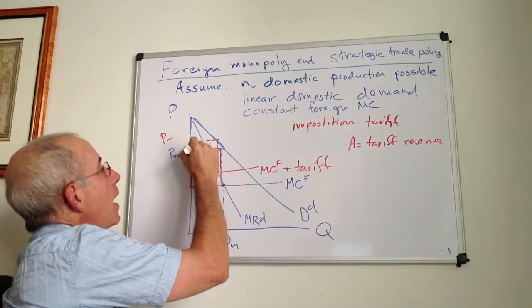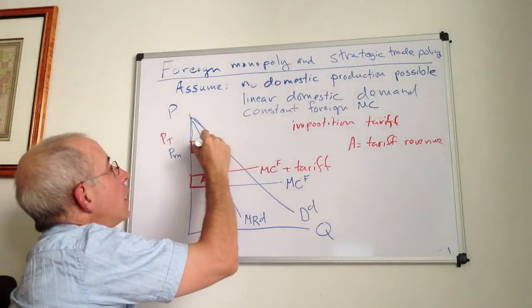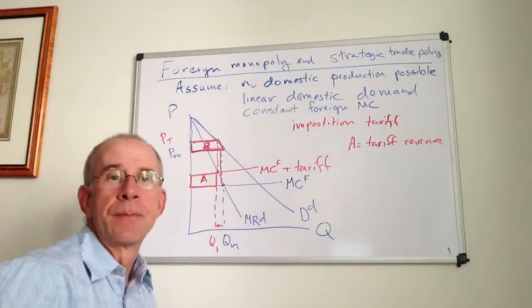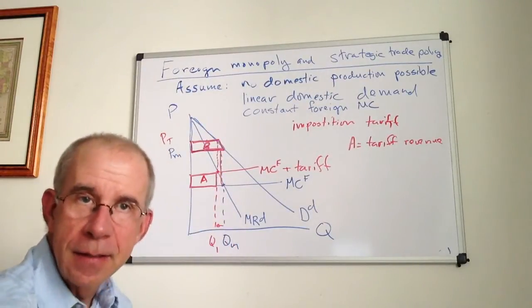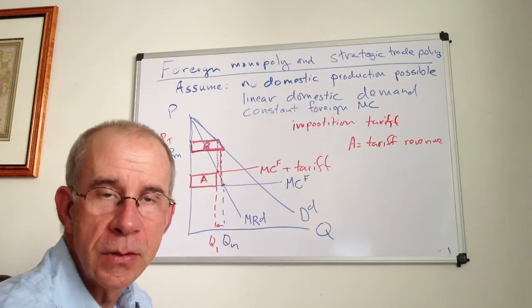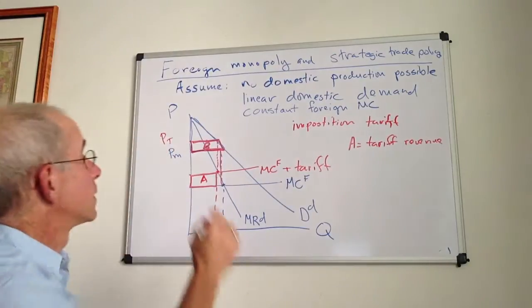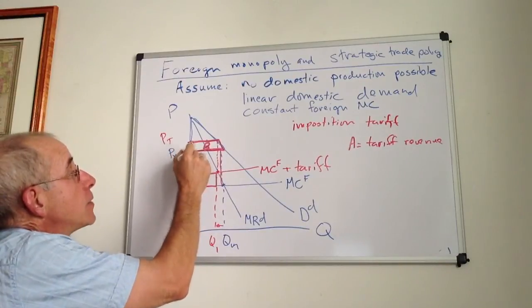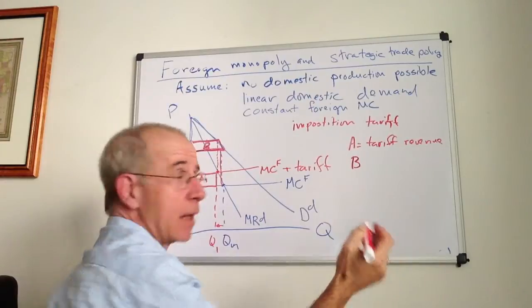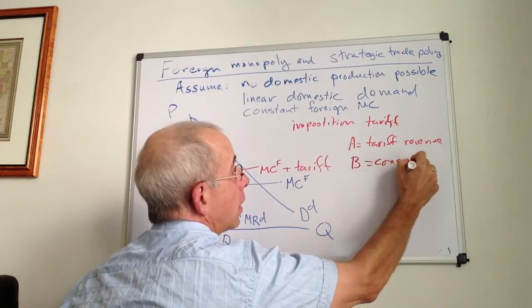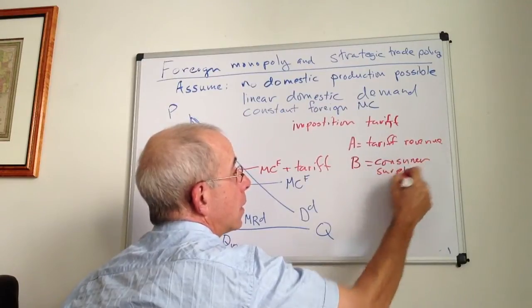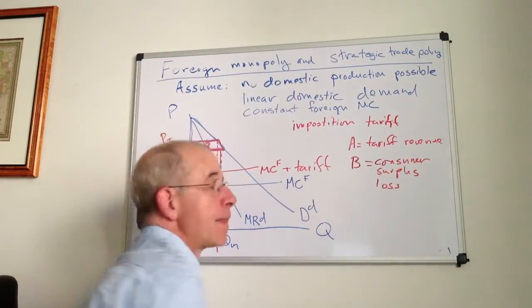And then you have this area B. Area B is the consumer surplus lost with the imposition of the tariff. That's the change in the price over to the demand curve. So B is a downside of this. This is a consumer surplus loss.